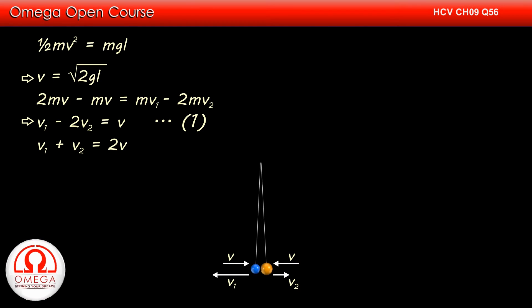As in a perfectly elastic collision, approach and separation speeds are equal, v1 plus v2 must be equal to 2v.